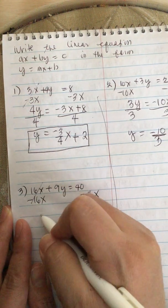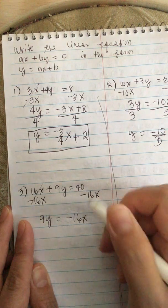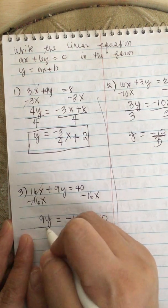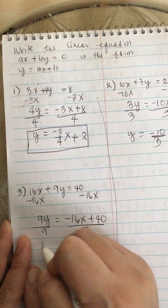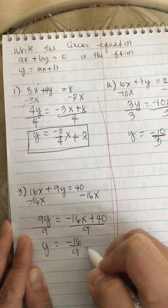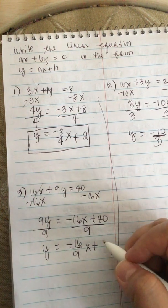So we have 9Y is equal to minus 16X plus 40. Then we divide by 9, so Y equals minus 16 over 9X plus 40 over 9.